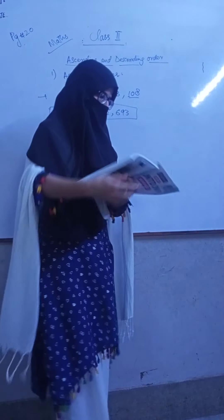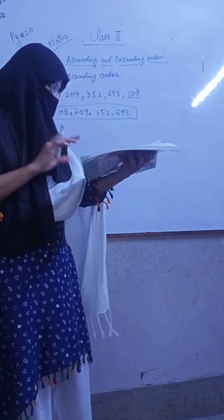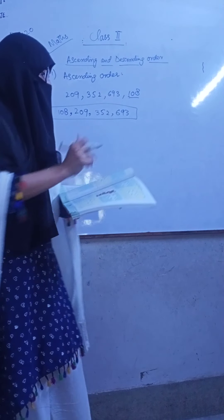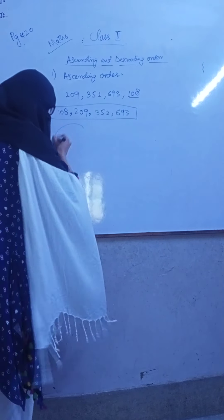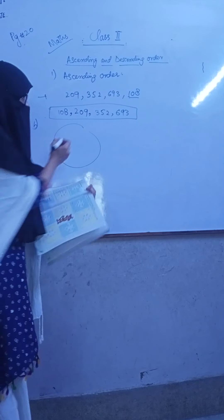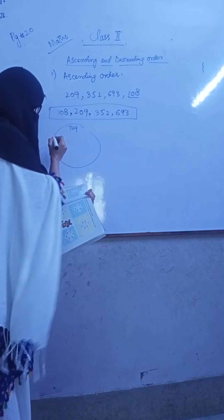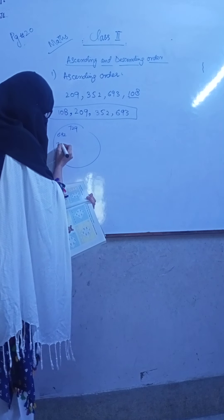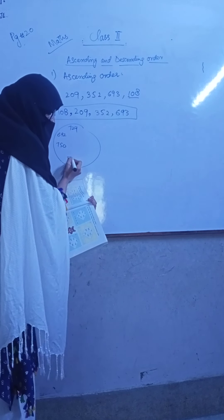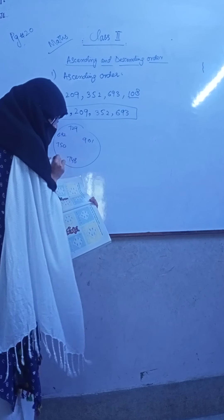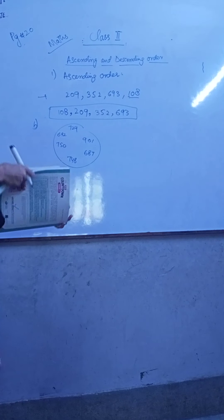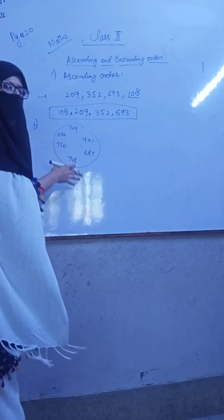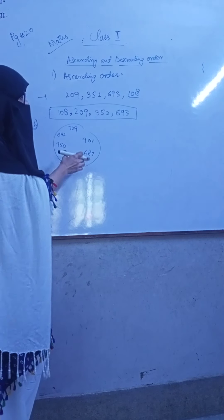But if we have another position question, page number 20, question number 1. We have a circle here. This means 729, 692, 750, 748, 901, and 687. First of all, how many say smallest number? Find the name. What is the smallest number?